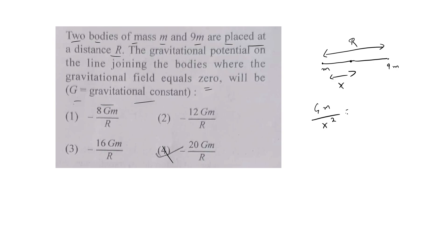equals G times 9m by (R minus x) whole squared. G goes off, m goes off, all the squares go off, so it will be R minus x is equal to 3. 3 squared is 9, so that square part also went off.